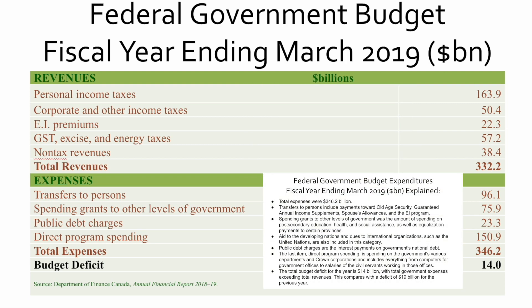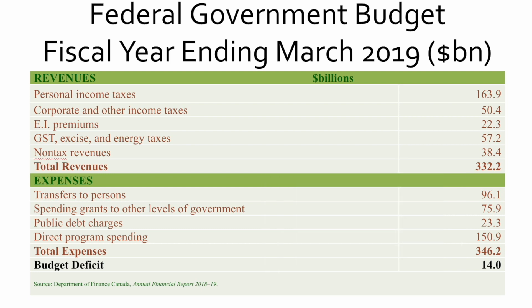On the expenditure side: transfers to persons — unemployment and employment insurance and the like — $96 billion; special spending grants and children's benefits $76 billion; public debt charges, essentially paying interest on the debt, $23 billion; and direct program spending $151 billion — for total expenses of $346.2 billion. You'll notice that expenses exceeded revenues, meaning some of the spending was funded by borrowing. The budget deficit — the difference between how much was taken in and how much was spent — was $14 billion. We spent more than we took in.